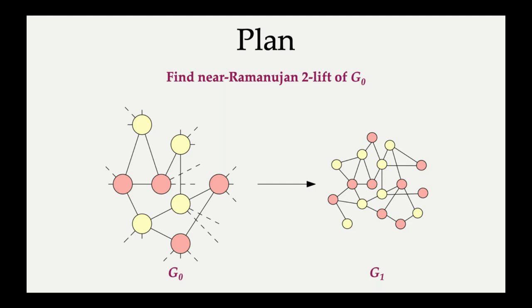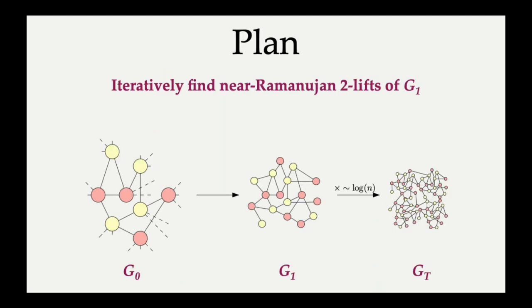So now, once we successfully find a near-Ramanujan 2-lift of G₀, we actually have a graph on 2 × 2^√log n vertices. So the natural strategy to get a graph on n vertices is to just keep going. That is, you lifted G₀ to G₁. Now you want to lift G₁ to an even bigger graph G₂, and iteratively perform this procedure log n times until we are left with a graph on Θ(n) vertices, which is Gₜ. And at every step, we want the lift that we find to actually be Ramanujan. And the key result in our paper is a polynomial time algorithm to find such a good 2-lift.